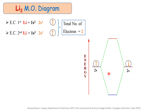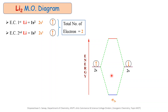When 2 atomic orbitals from 2 atoms combine together, they form 2 molecular orbitals. Out of these 2 molecular orbitals, one is the bonding molecular orbital which is lower in energy, and one is the anti-bonding molecular orbital which is higher in energy. The lower energy bonding molecular orbital is generally denoted by sigma 2s, where sigma means the sigma bonding molecular orbital and 2s means it is formed by the combination of 2s atomic orbitals.